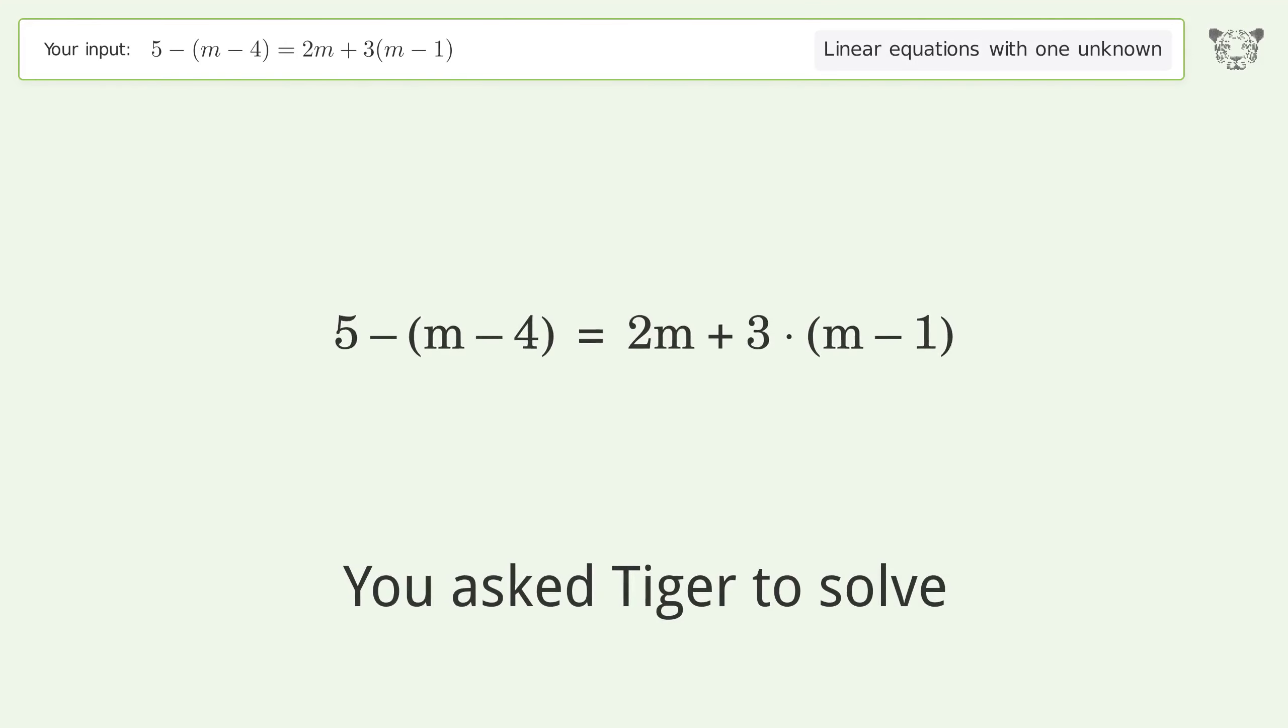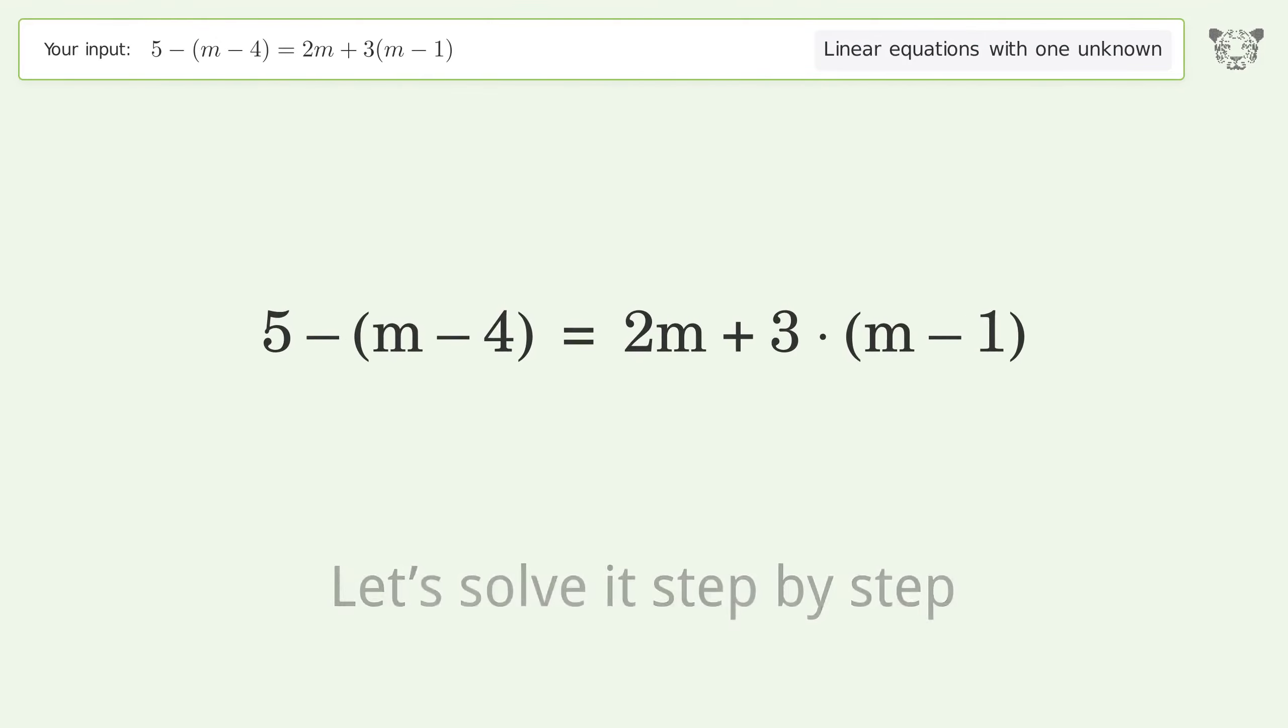You asked Tiger to solve this. It deals with linear equations with one unknown. The final result is m equals 2. Let's solve it step by step. Simplify the expression, expand the parentheses, group like terms.